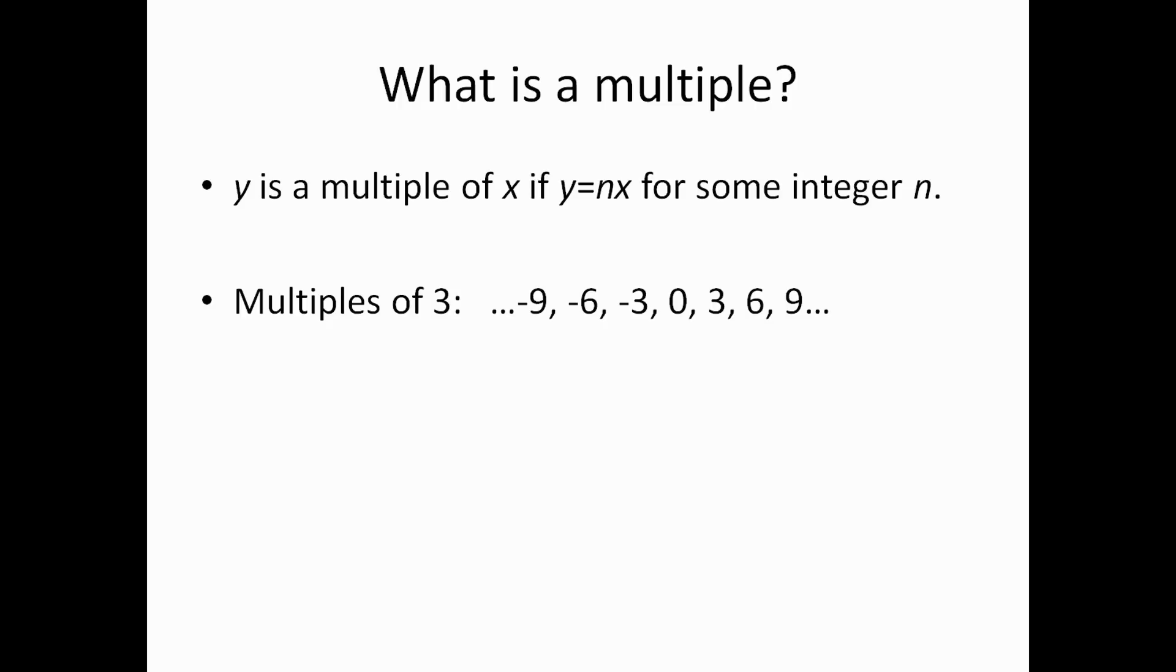So, what makes these things multiples of 3? Well, the definition says they're multiples of 3 because we can get all these numbers by doing 3 times some other integer. So, for example, negative 9 is 3 times negative 3. Negative 6 is 3 times negative 2. Negative 3 is 3 times negative 1.